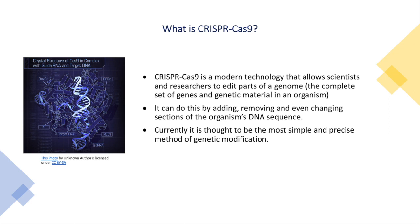CRISPR-Cas9 is a unique and modern technology that enables scientists and researchers to edit parts of the genome. The genome is the complete set of genes and genetic material in an organism. Scientists edit the genome by removing, adding, and even changing sections of the organism's DNA.